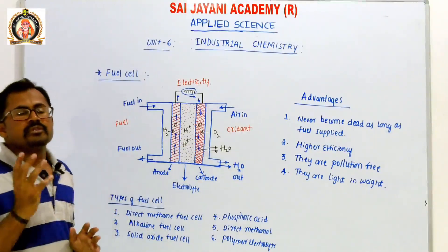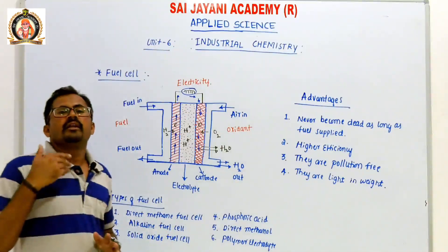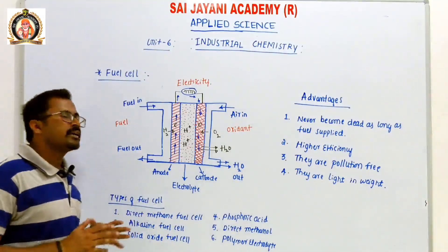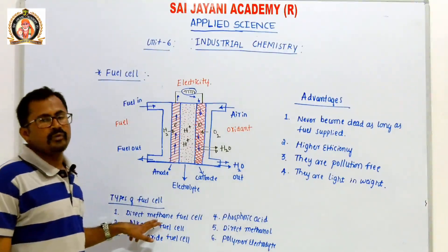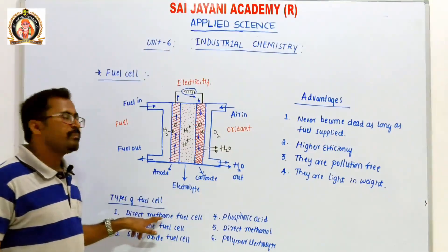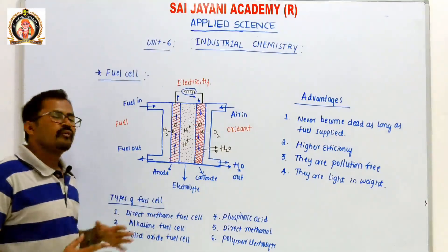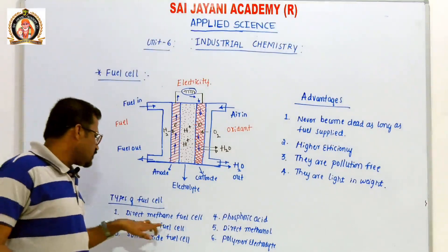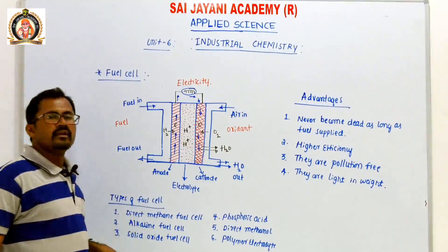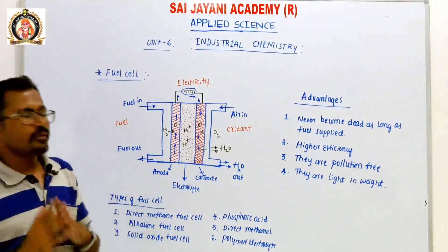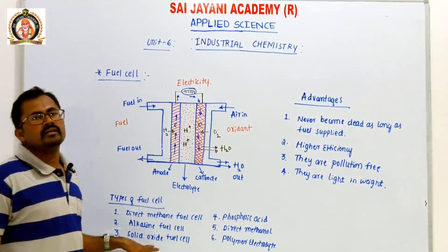There are many types of fuel cells, named according to the fuel used. The first type is the direct methane fuel cell, in which methane is used as the fuel. The second type is the alkaline fuel cell, in which an alkaline substance is used as the fuel. The third type is the solid oxide fuel cell, where a solid oxide is used.